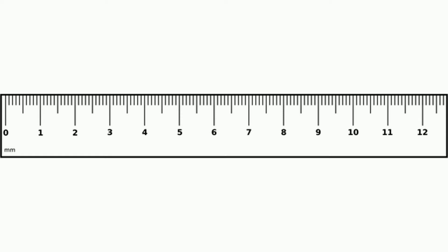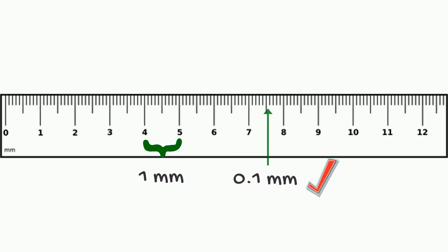If this portion measures 1 mm, then each small graduation measures 0.1 mm.